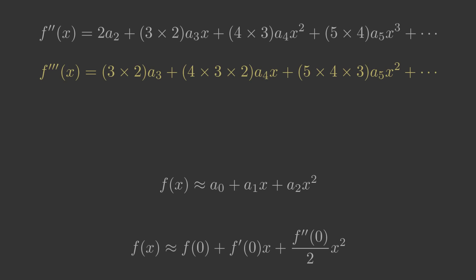On the right hand side the constant term 2a2 goes to 0. 3 times 2a3x becomes 3 times 2a3, 4 times 3a4x squared becomes 4 times 3 times 2a4x, and 5 times 4a5x cubed becomes 5 times 4 times 3a5x squared.